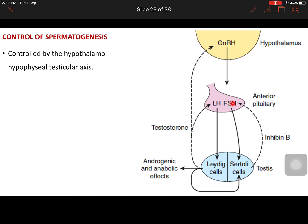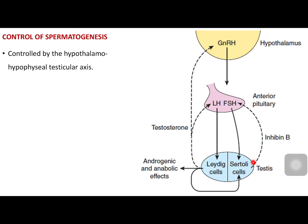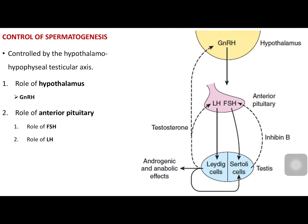Follicle stimulating hormone is secreted from the anterior pituitary. This hormone acts on Sertoli cells and promotes spermatogenesis. On stimulation of Sertoli cells under the influence of FSH, it also causes production of inhibin B. This inhibin B exerts a negative feedback inhibition on the secretion of FSH. That is how the hypothalamo-hypophysial-testicular axis acts in regulating spermatogenesis. Other hormones important for spermatogenesis are growth hormone and testosterone.